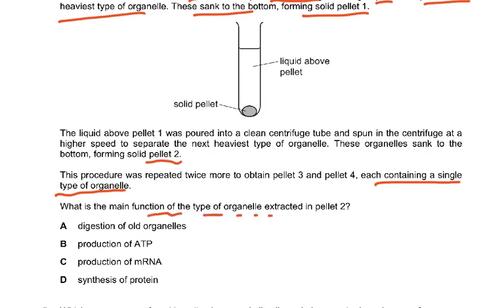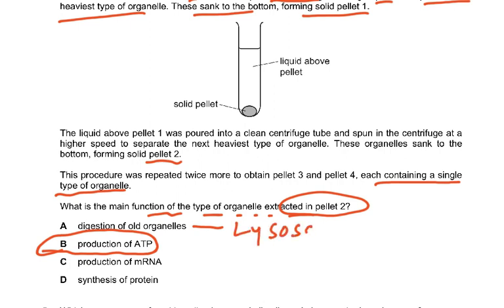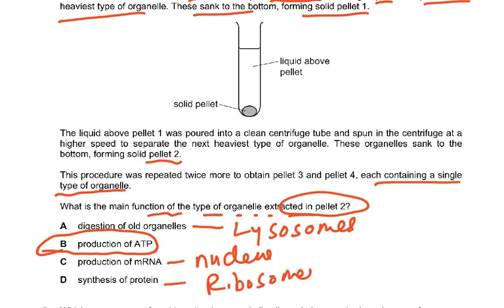What is the main function of the organelles extracted in pellet 2? Since pellet 2 contains mitochondria, the answer is production of ATP. Digestion of old organelles would be lysosomes; production of mRNA would be the nucleus; synthesis of proteins would be ribosomes. Size order from largest to smallest: nucleus, mitochondria, lysosomes, then ribosomes.